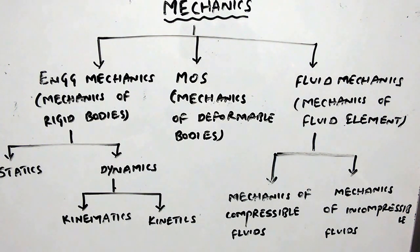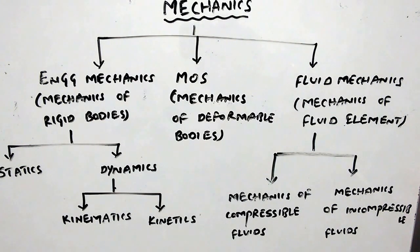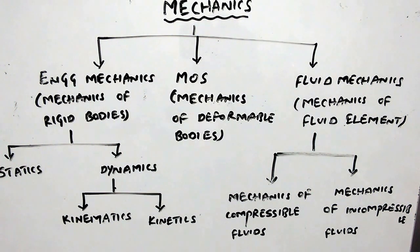The major difference between a rigid body and a deformable body is: if a body doesn't undergo any deformation or change in its shape or size under the application of load, such bodies are known as rigid bodies. If a body undergoes deformation or change in shape or size under the application of load, such bodies are known as deformable bodies.